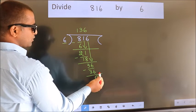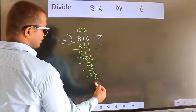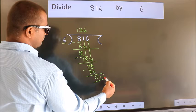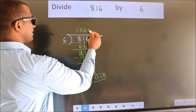No more numbers to bring down. So we stop here. This is our remainder. This is our quotient.